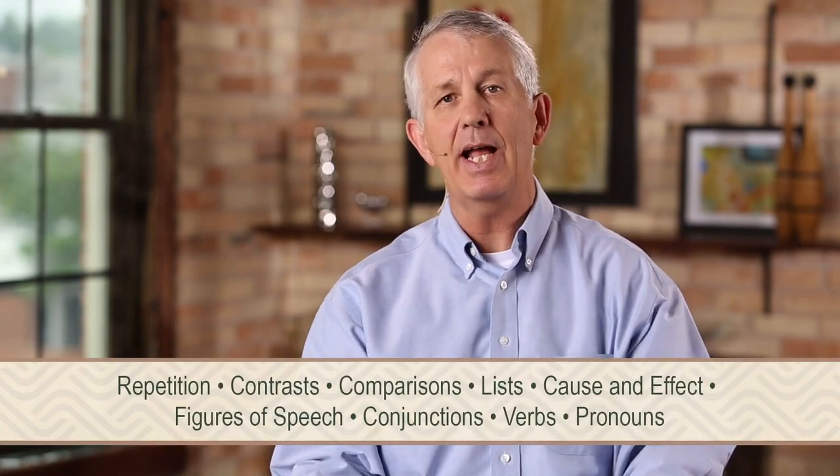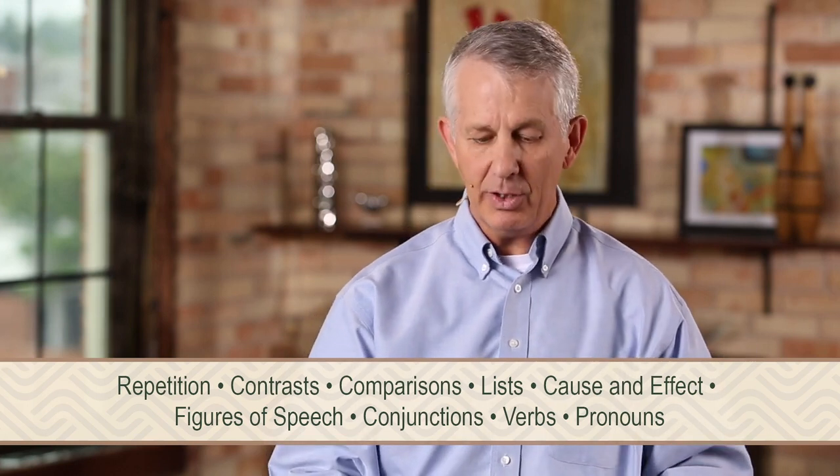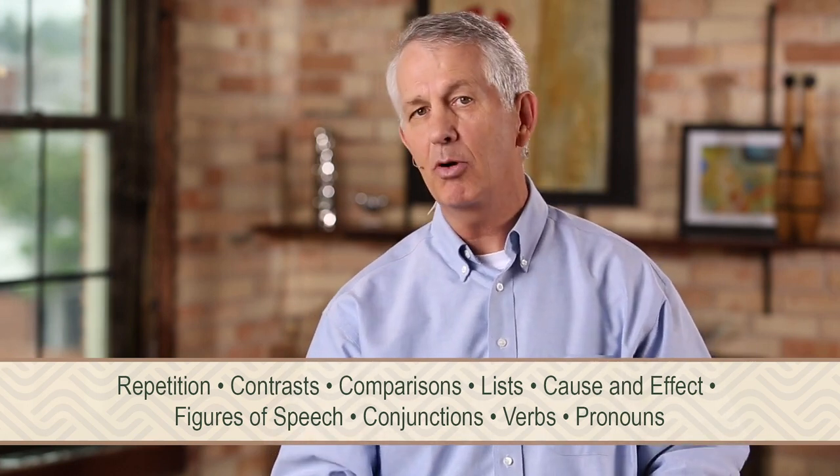Don't forget what we did in the last chapter. In chapter 3 we looked at things to look for in sentences — repetition and contrast, comparisons, lists, cause and effect, figures of speech, conjunctions, verbs, and pronouns. Those things are not going away as we move to larger units of text. As we move from sentences to paragraphs, we want to continue to use those same tools, but there are some specific things we want to add to your repertoire of literary devices.